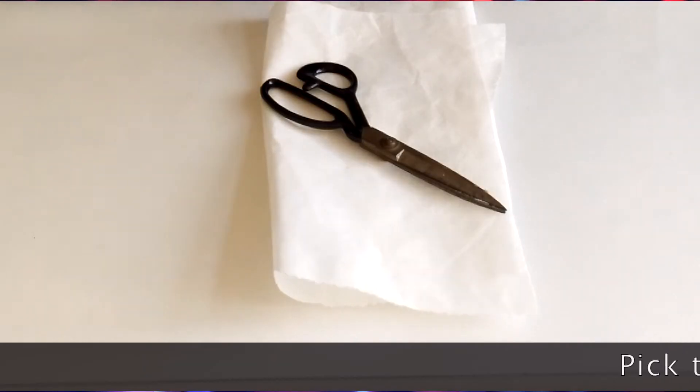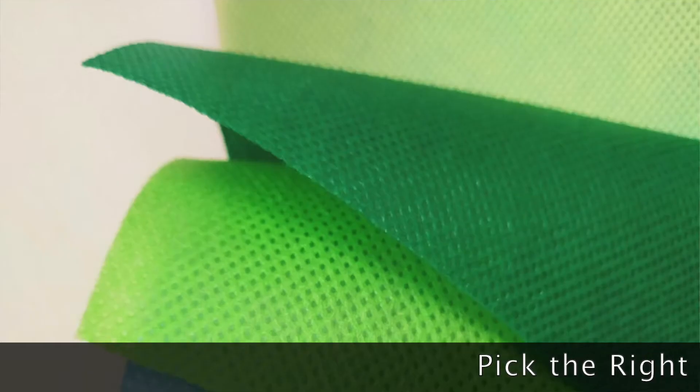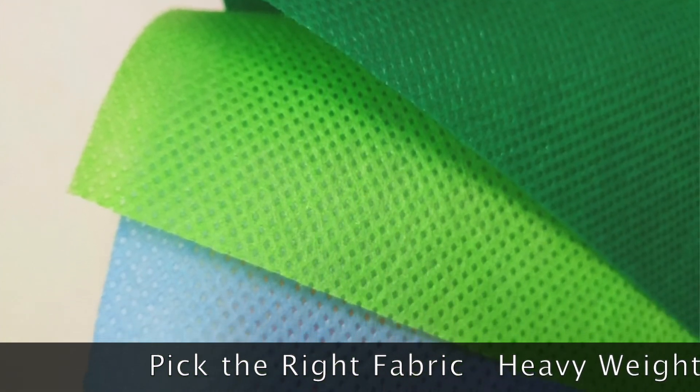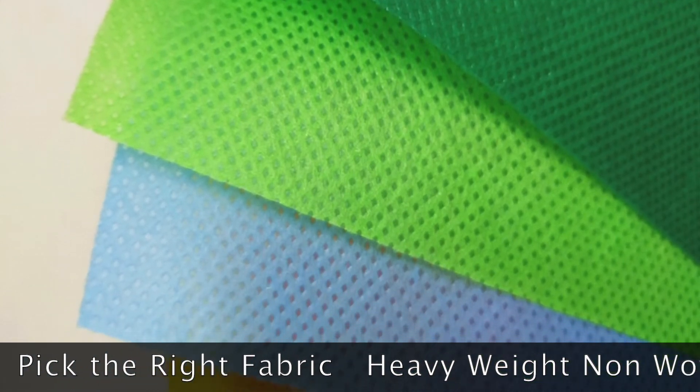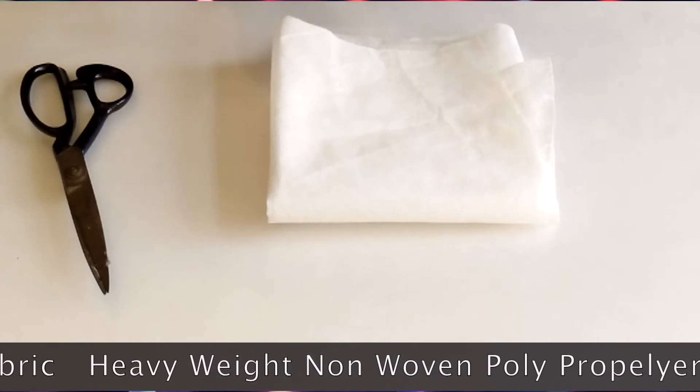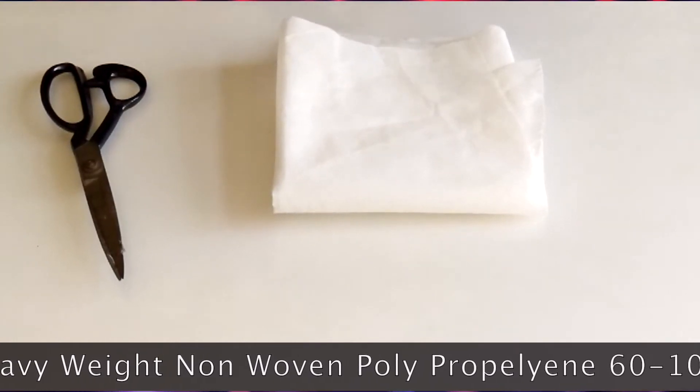First tip, pick the right fabric. Now picking out your fabric, you want a non-woven polypropylene that I found works the best. It's very durable. You want the fabric weight to be proper also, heavy to keep the debris in, but not so heavy that you don't get good water flow.